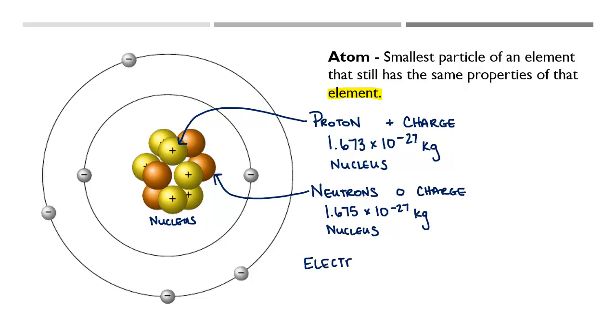They are also located in the nucleus. The last subatomic particle is the electron. An electron has a negative charge. It has a mass of 9.109 times 10 to the negative 31st kilograms.